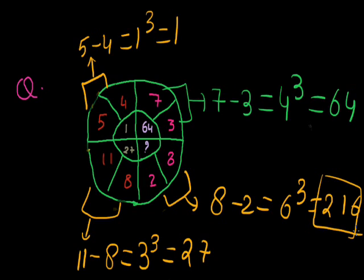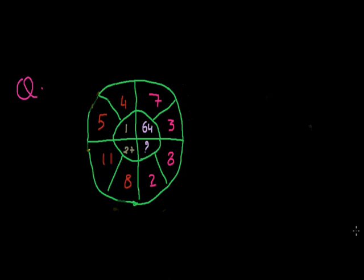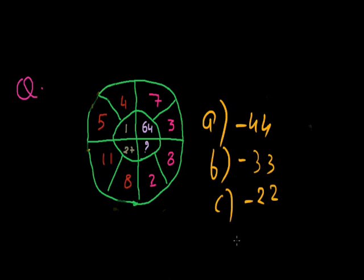But I will change the question. Options also. The options are given as: first one, A equals minus 44, B minus 43, C minus 22, D minus 64. Yeah, it's very hard. Can you tell me? Yes, why not?